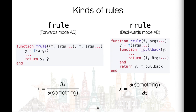There are two kinds of rules that ChainRules provides: the frule for forwards mode AD and the rrule for backwards mode AD. The frule takes a function and its arguments and transforms the derivatives of the primal inputs to the derivatives of the primal outputs. The rrule takes a function and its arguments and returns the primal result as well as a pullback, where the pullback is a function that takes the derivative of the primal output and returns the derivatives of the primal inputs.